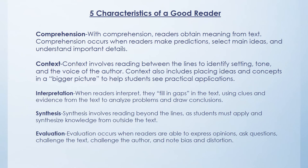There are five generally recognized characteristics of a good reader: comprehension, context, interpretation, synthesis, and evaluation. Comprehension is when the reader obtains meaning from text — making predictions, selecting main ideas, and understanding important details. Context involves reading between the lines to identify setting, tone, and the author's voice. Interpretation is filling in gaps using clues and evidence from the text. Synthesis involves applying knowledge from outside the text. Evaluation occurs when readers express opinions, challenge the text or author, and note bias and distortion.